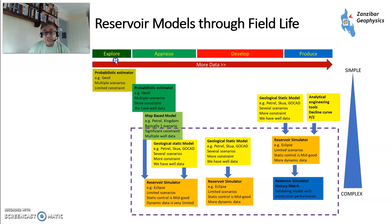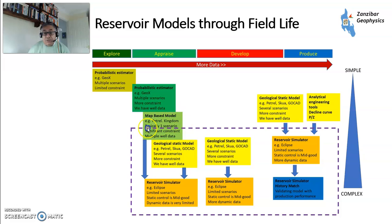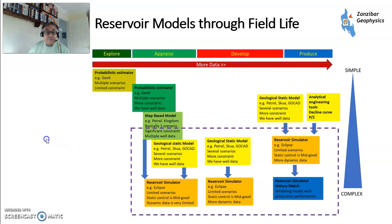Reservoir models span the full field life. This is the NP cycle: first you explore, then you appraise, then you develop, then you produce. The further along you are, the more data you get. Initially, you start off doing probabilistic estimations in something like GeoX — either deterministic or probabilistic estimation of hydrocarbon volumes. Then you move to a map-based model, then you end up building geocellular models using software like Petrel, Skua, or GoCAD. Then you move to a dynamic simulator using something like Eclipse, which was developed by my stepfather. And eventually, you will have extra data and extra analyticals to help you validate your model.